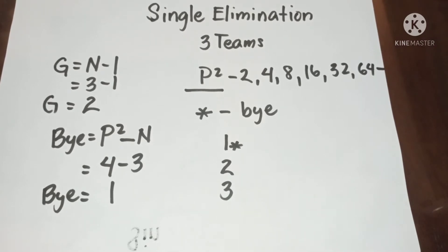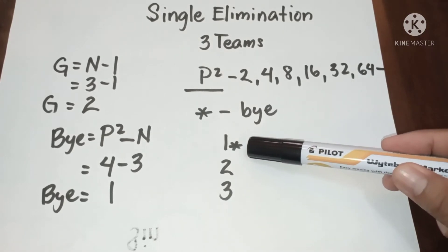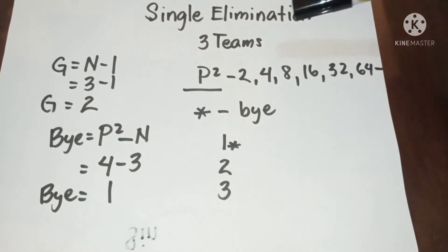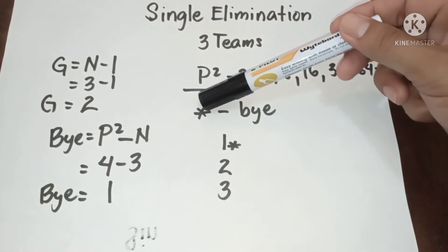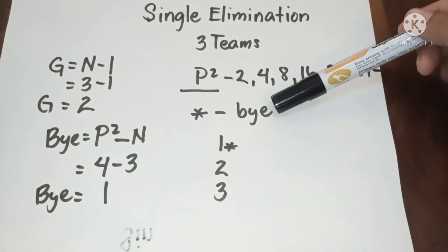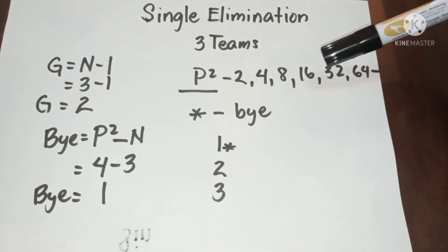Since there is only one bye, it must be placed on the top. Take note that we use the asterisk to identify the bye. Now let's proceed to the diagram and game schedule.